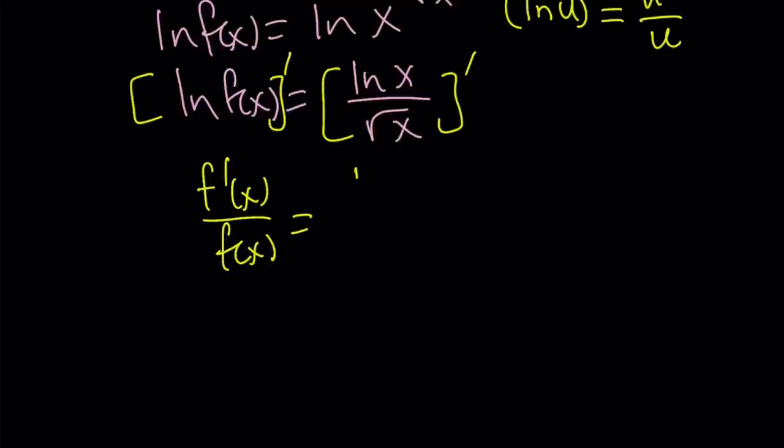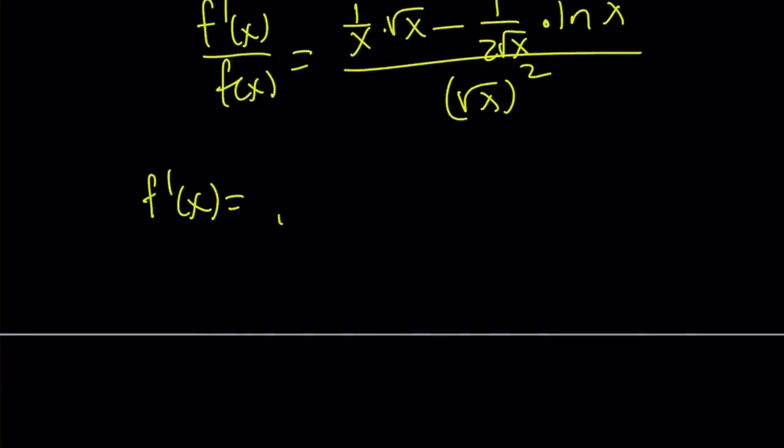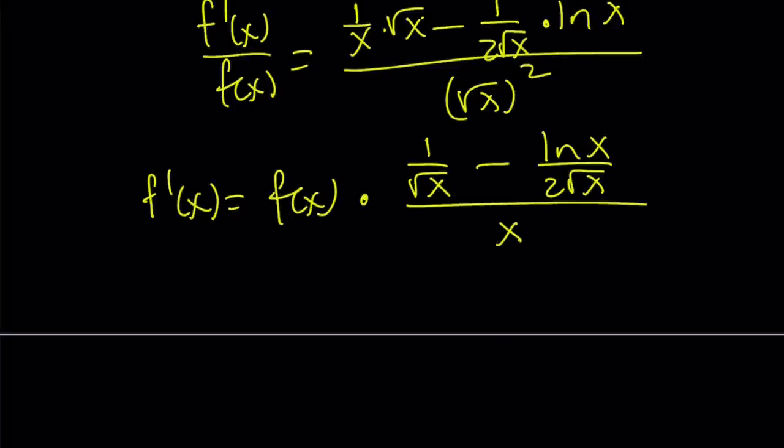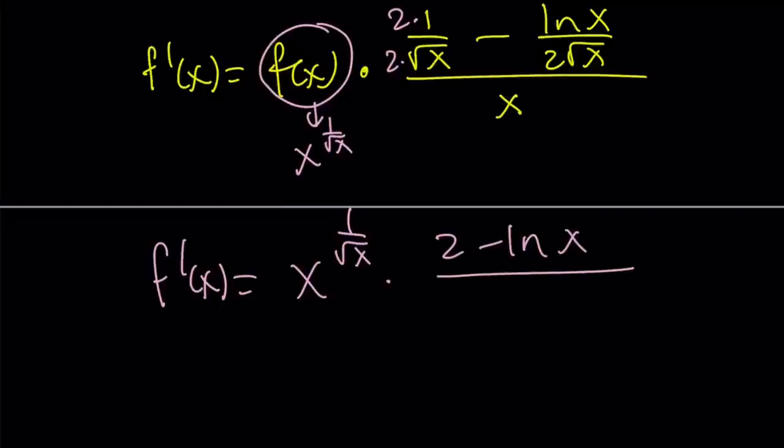On the right-hand side, we have the derivative of a quotient, which is the derivative of the numerator, 1 over x, times the denominator minus the derivative of the denominator, which is 1 over 2 square root of x, times the numerator, all divided by the denominator squared. I'm going to multiply both sides by f of x and simplify the top. 1 over x times square root of x can be written as 1 over square root of x, and this one as LN x over 2 square root of x, all divided by x. We're going to multiply by 2 to make a common denominator and replace this with x to the power of 1 over square root of x. The derivative of f is x to the power of 1 over square root of x, times 2 minus LN x over 2 square root of x, and the denominator is going to become 2x square root of x.